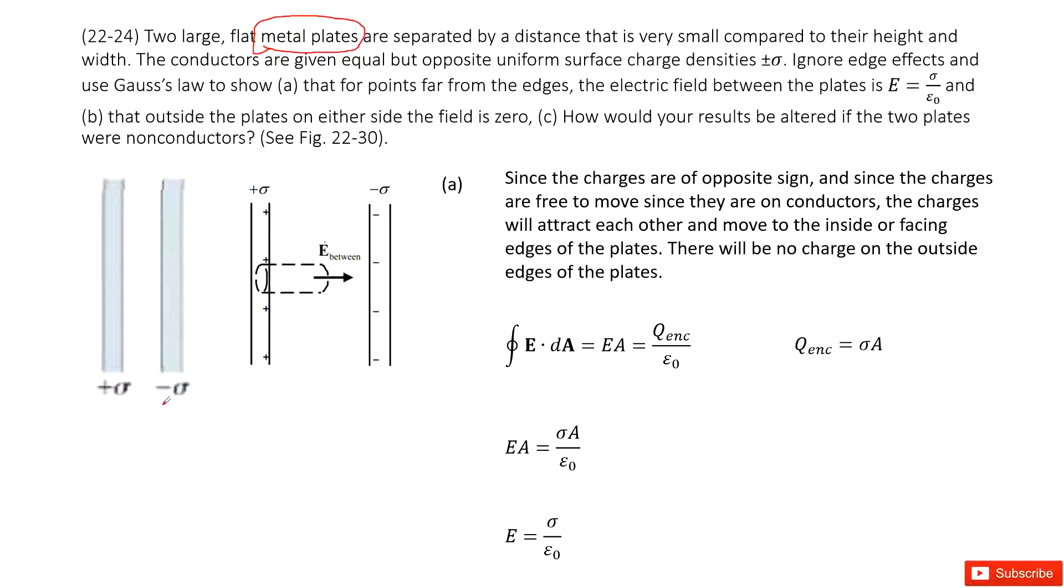And then we need to use Gauss's law to show that from the point far from the entrance, the electric field between these plates is this one. So we can see we consider this is a conductor. For conductors, we know the charges are distributed at the surface. So that means this positive plate, the charges are located at the surface. This side has negative charge located at surface.